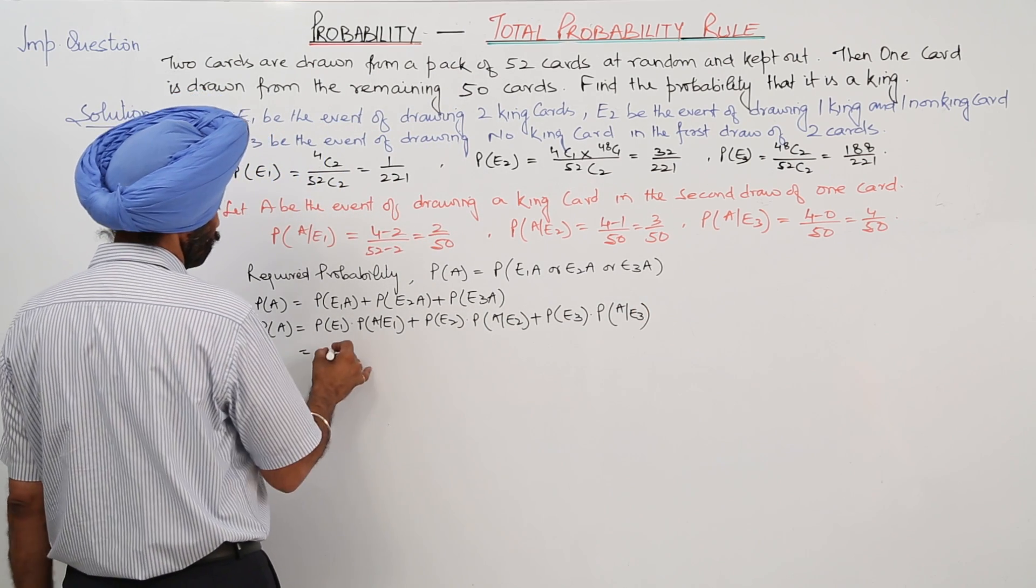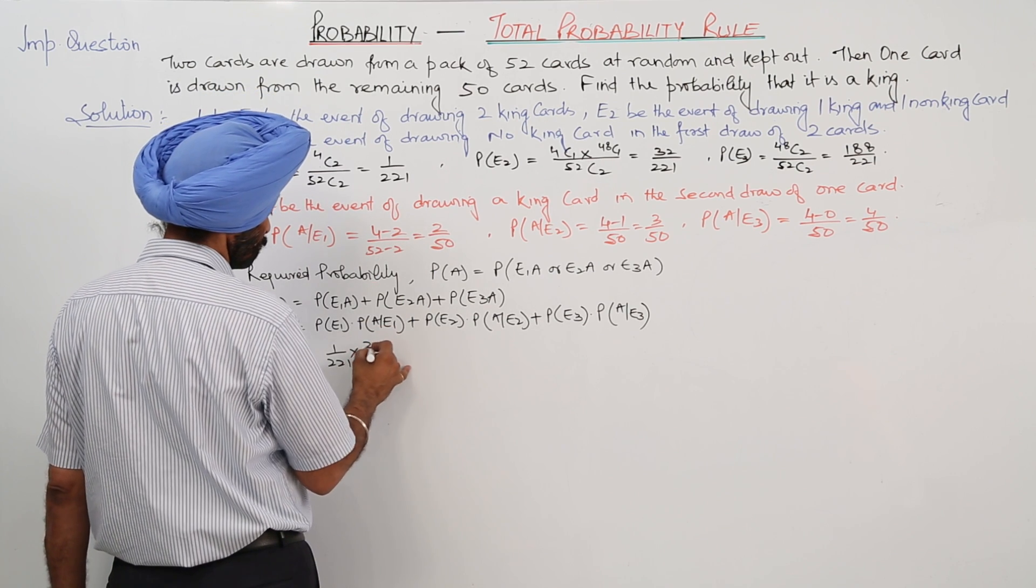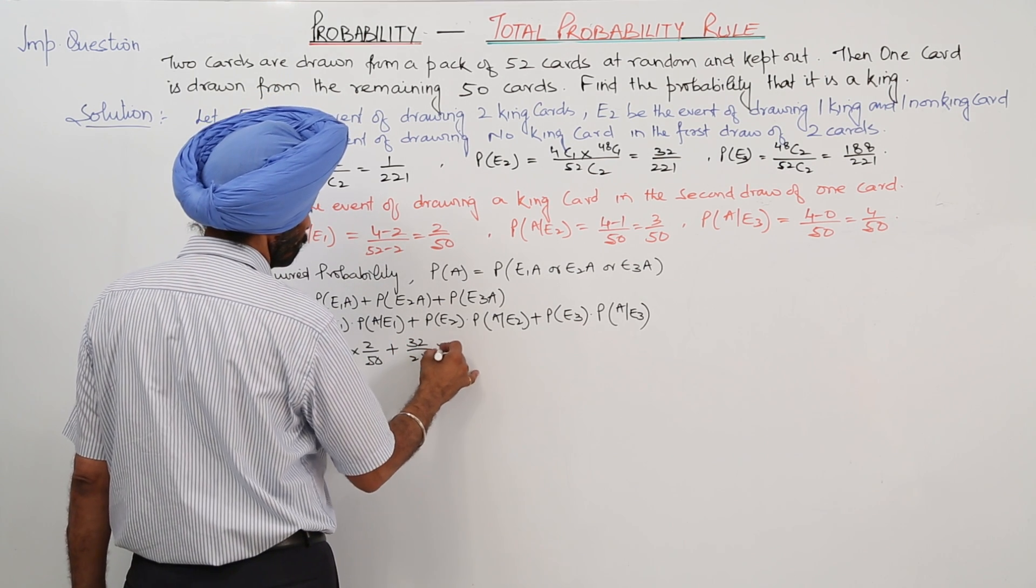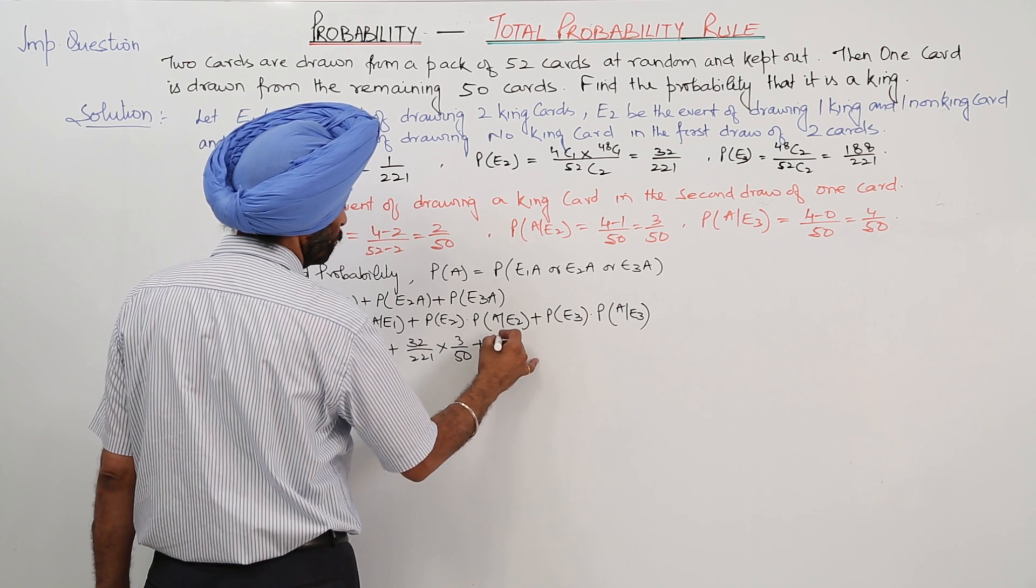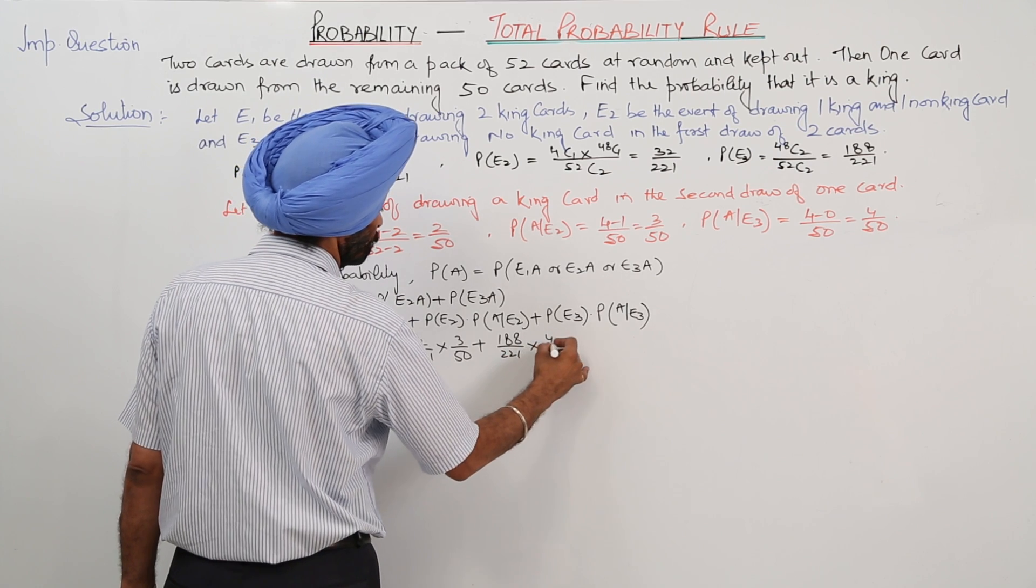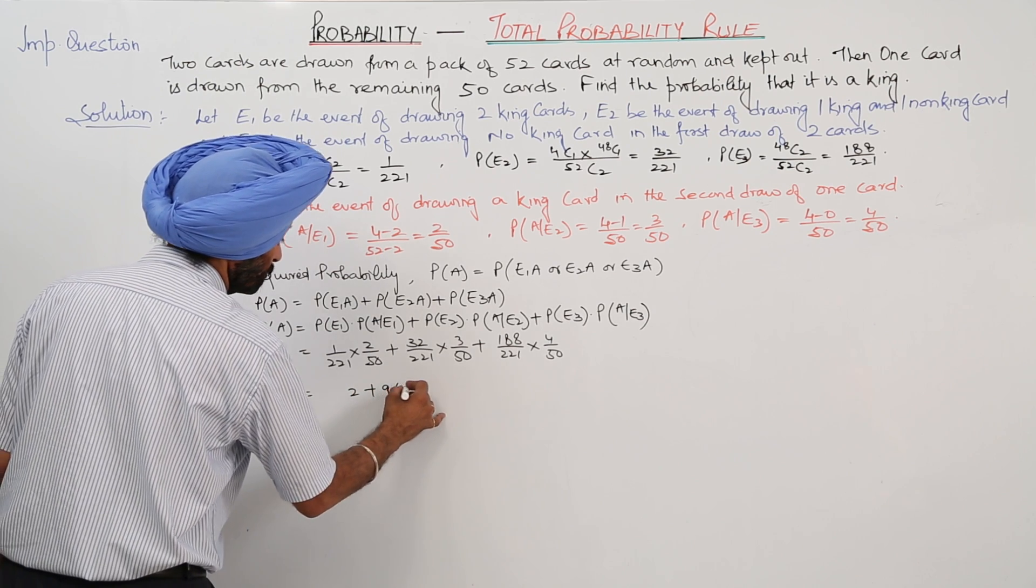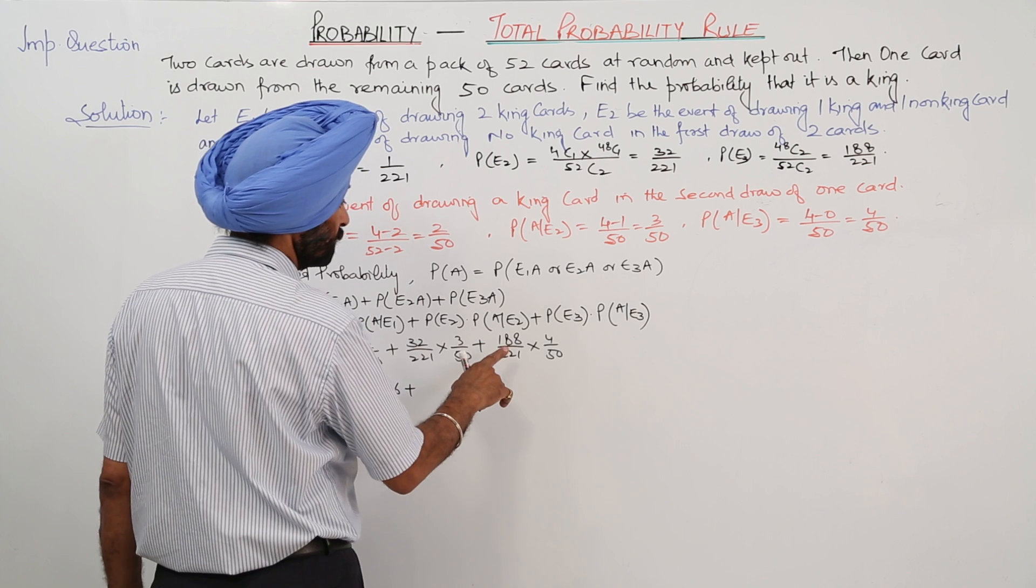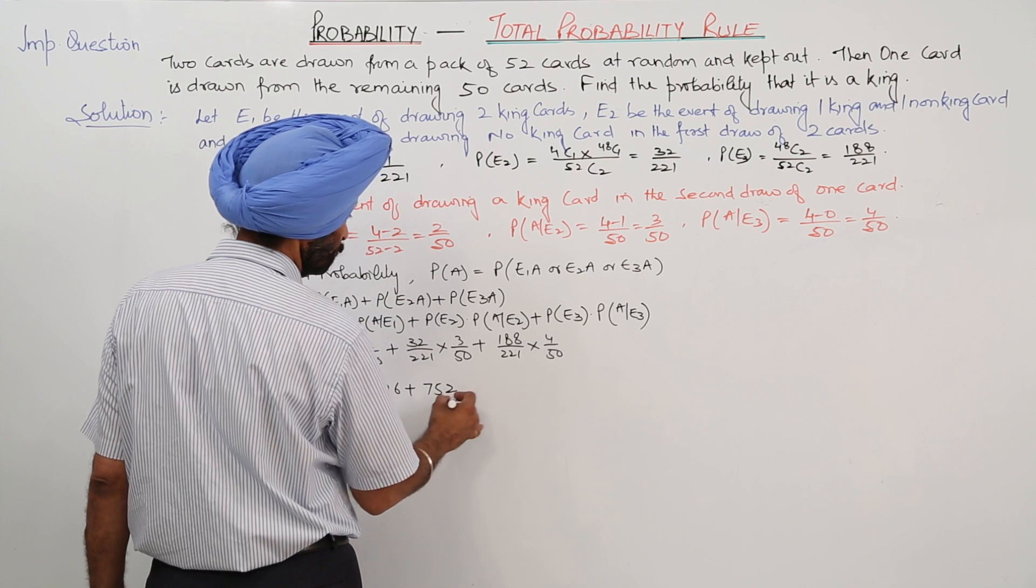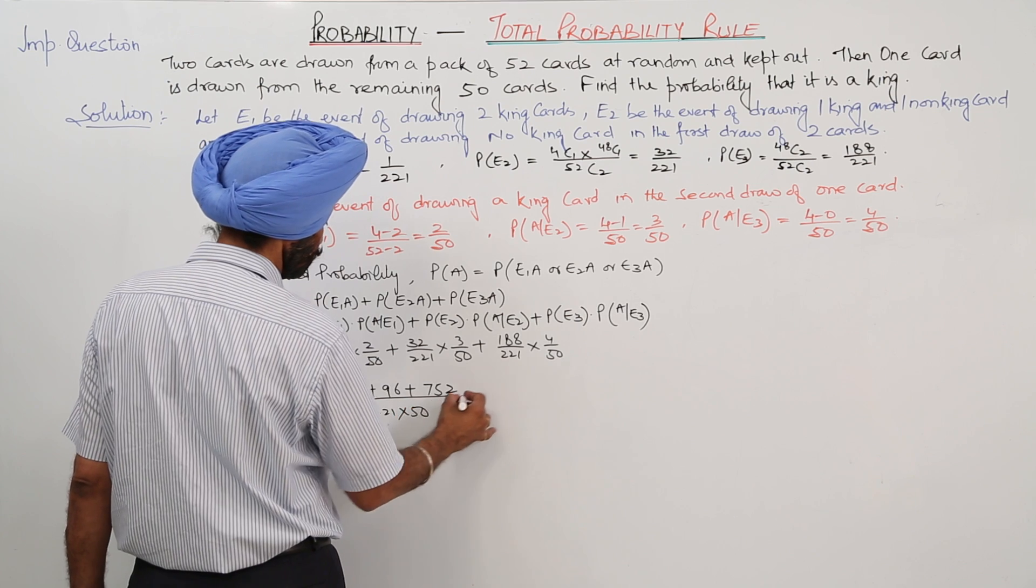Now E1, 1 upon 221 times 2 upon 50 plus 32 upon 221 times 3 upon 50 plus 188 upon 221 times 4 upon 50. Now this becomes 2 plus 96 plus, here it is 752, upon 221 times 50.